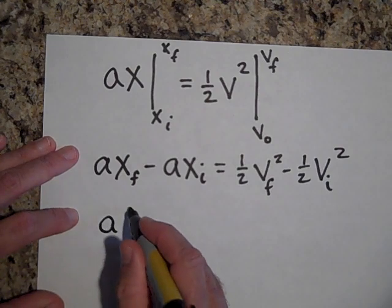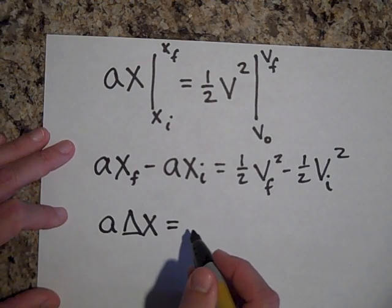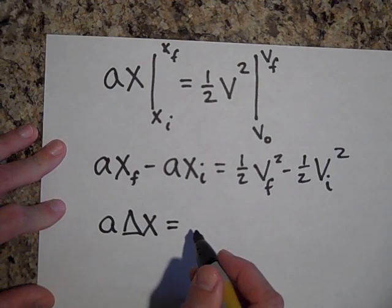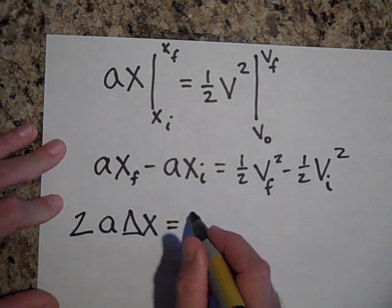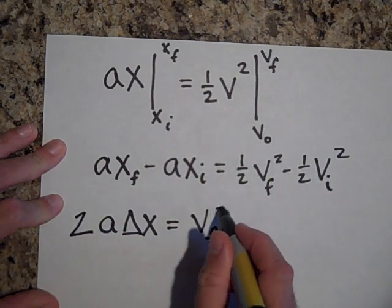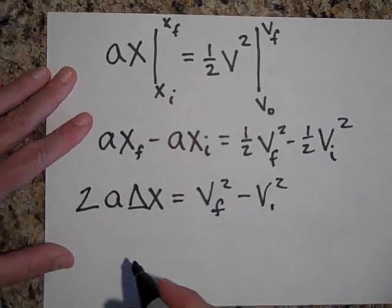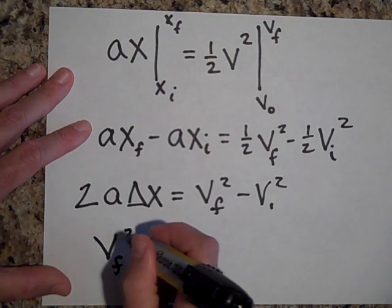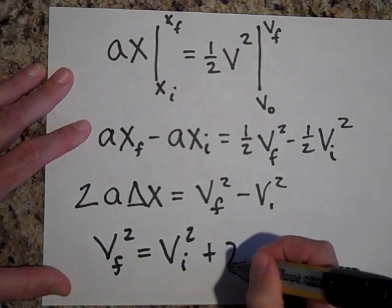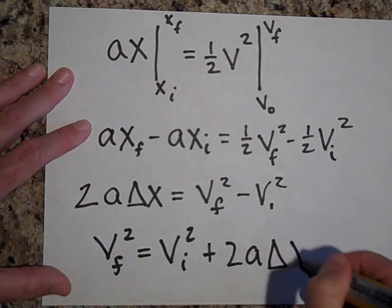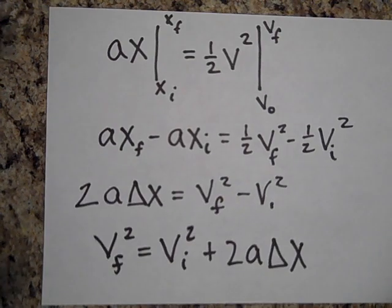The left side is a times delta-x. Multiplying both sides by two eliminates the one-half, leaving v-final-squared minus v-initial-squared equals 2·a·delta-x. Solving for v-final-squared: v-final-squared equals v-initial-squared plus 2·a·delta-x. And there you have it — all three kinematics equations derived using calculus.